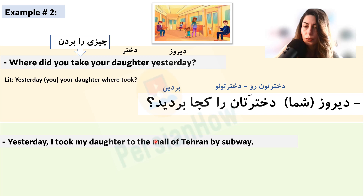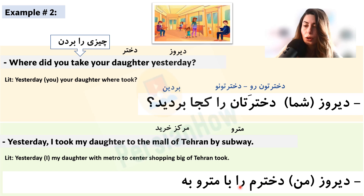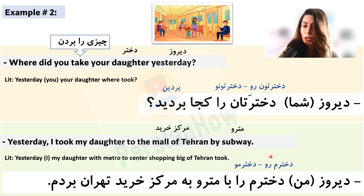Answer: yesterday I took my daughter to the Tehran Mall by subway — 'dirooz dokhtar-am ra ba metro be markaz-e kharid-e Tehran bordam.' 'Markaz' means center and 'kharid' means shopping, so 'markaz-e kharid' is shopping center. In Farsi, for subway you use 'ba' (with), not 'by.' Informally, 'dokhtar-am ra' changes to 'dokhtar-amro' and the sentence reads: 'dirooz dokhtar-amro ba metro be markaz-e kharid-e Tehran bordam.'